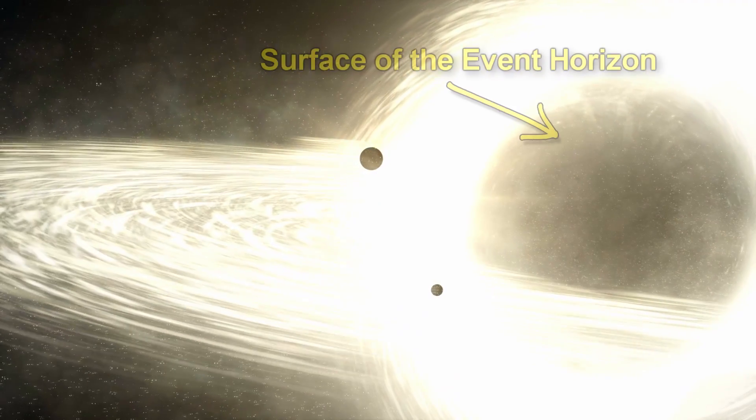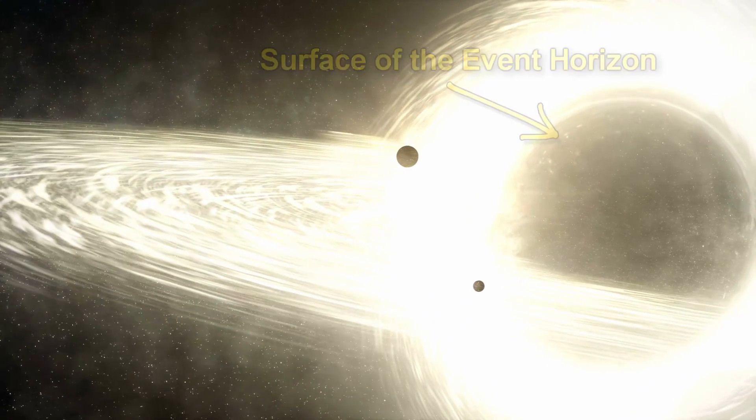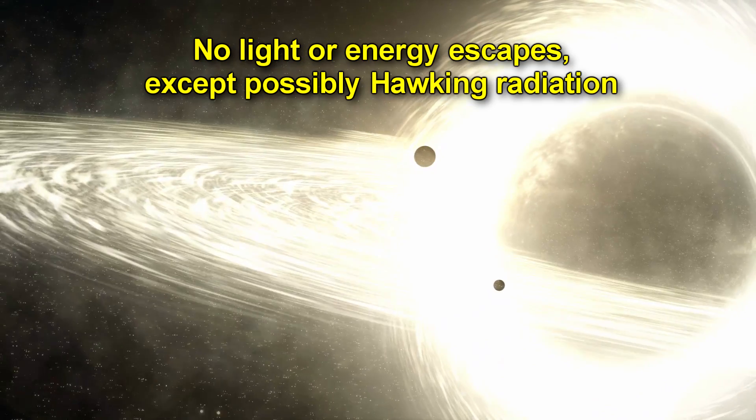So if there's nothing there, what does it mean when we talk about different size black holes? When we talk about the size of a black hole, we're really talking about the size of the event horizon. This is like a sphere around the singularity. It's completely dark because light and no other form of energy can escape beyond it.